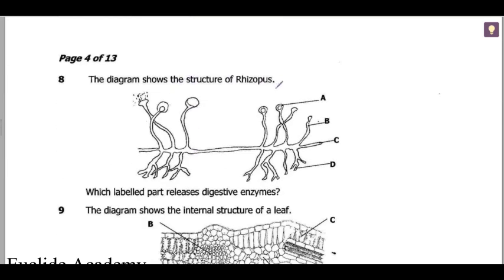Question 8 on the structure of Rhizopus and saprophytic nutrition: which labeled part releases digestive enzymes? The hyphae release digestive enzymes externally, so that is the answer — the horizontal and vertical structures indicate where the digestive enzymes are released.